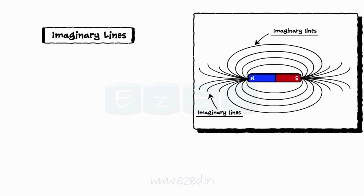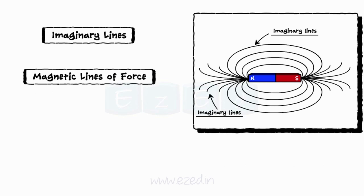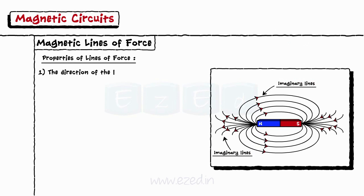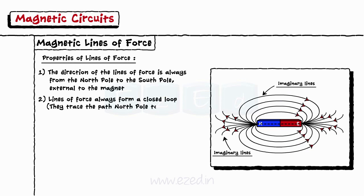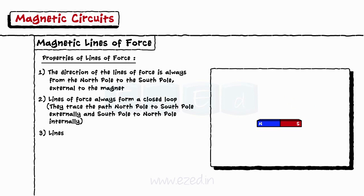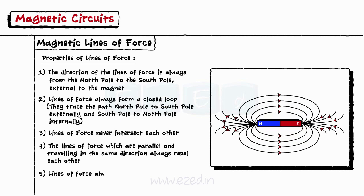As they don't exist physically, we call them as imaginary lines. The properties of lines of force are: the direction of the lines of force is always from the north pole to the south pole, external to the magnet. Lines of force always form a closed loop — they trace the path from the north pole to the south pole externally, and the south pole to the north pole internally. Lines of force never intersect each other, and they always prefer a path offering less opposition.